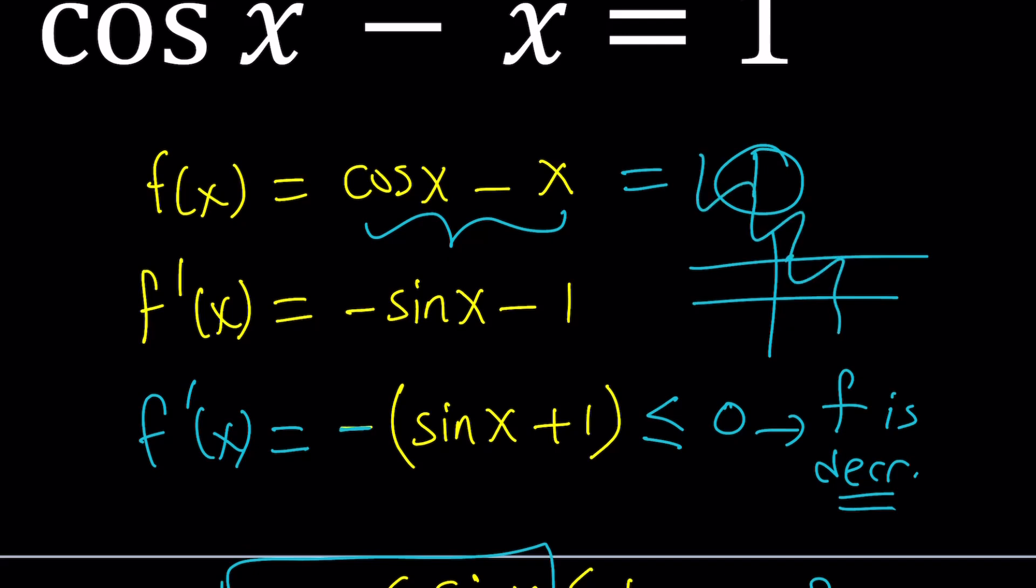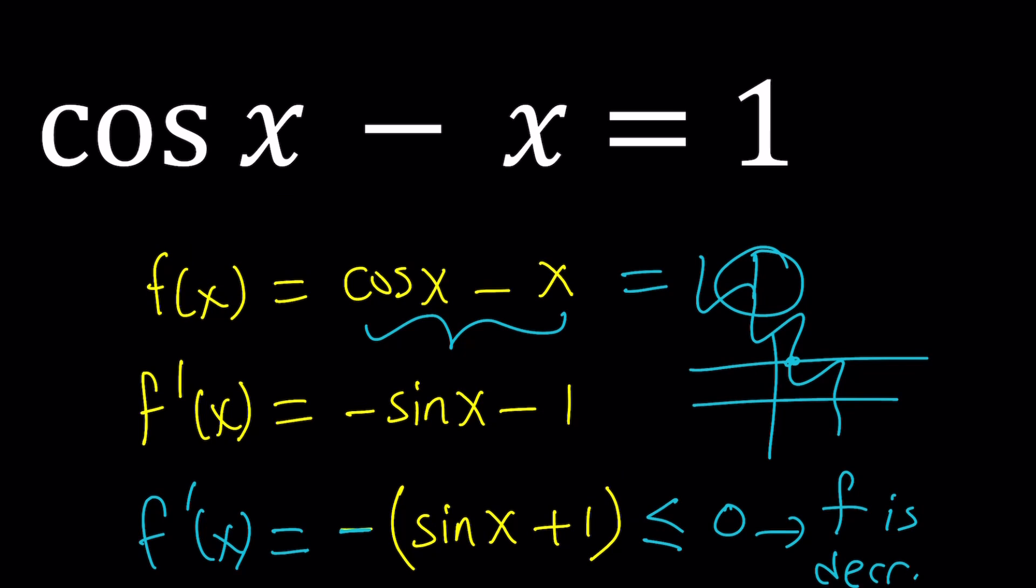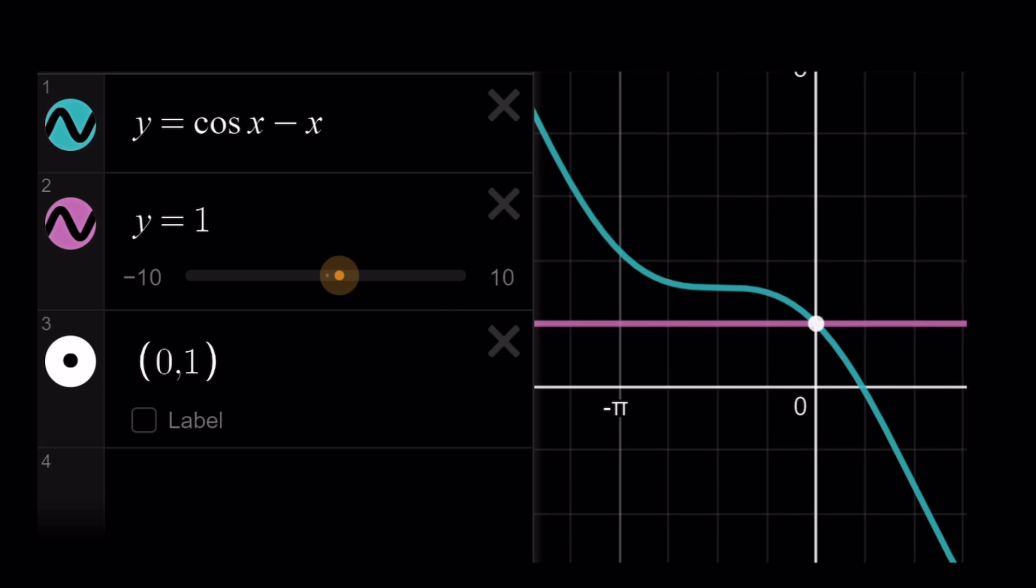They're going to intersect at a single point. Of course, the graph isn't like that, but I'm just making it up. Well, let's go ahead and take a look at the graph of cosine x minus x to get a better idea. So here's the graph of cosine x minus x. As you can see, it is decreasing. What happens at some of these values?